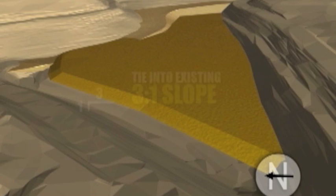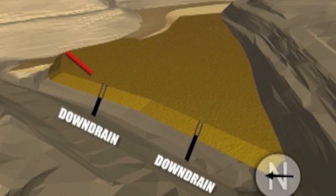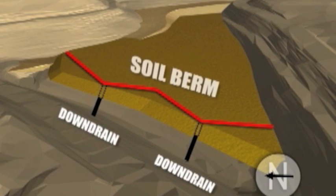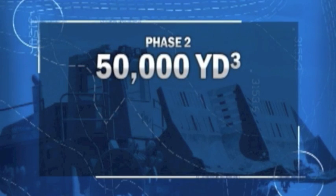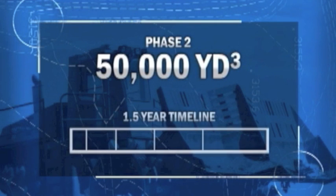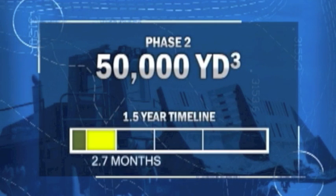In order to prevent erosion on the west slope, you'll be constructing two down drains and a soil berm. Phase 2 represents just over 50,000 cubic yards of filling. We anticipate this will take approximately 2.7 months to complete.